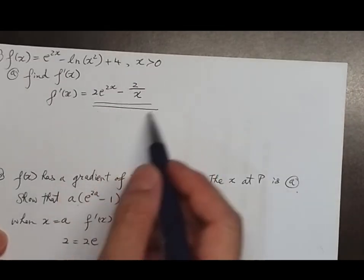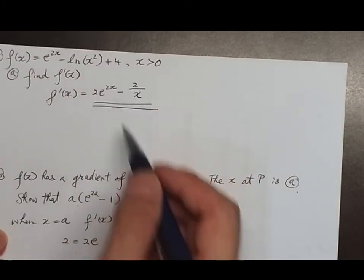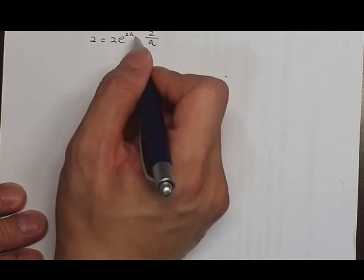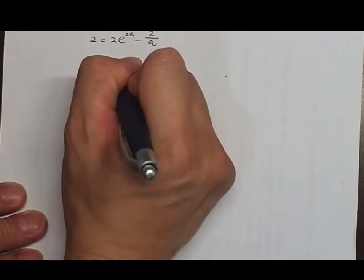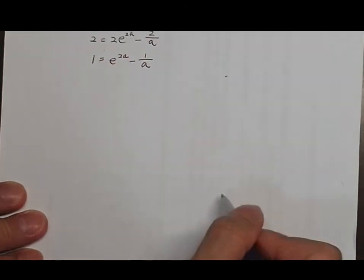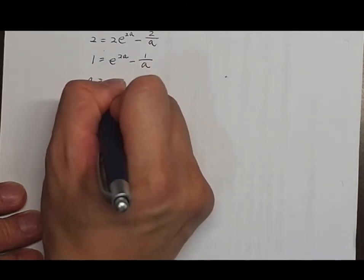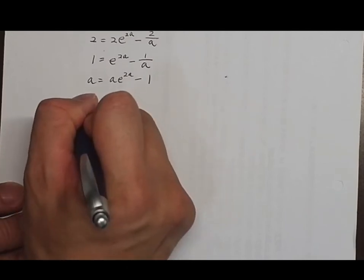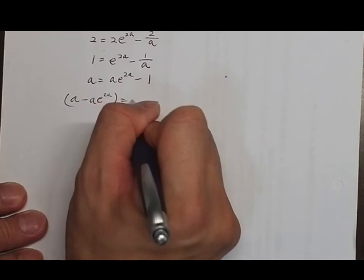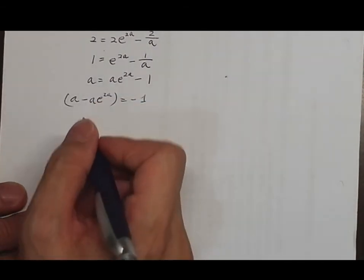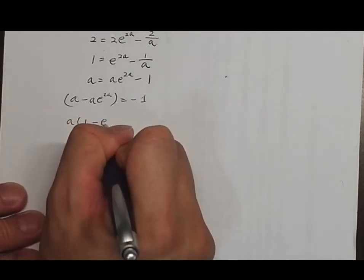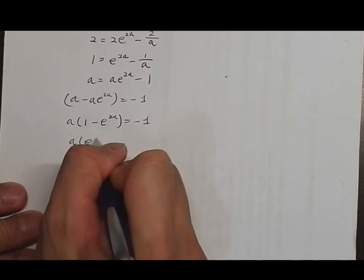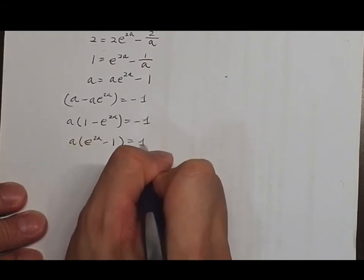Setting 2 equals 2e to the 2a minus 2/a, we divide both sides by 2: 1 equals e to the a minus 1/a. Multiplying each side by a: a equals a·e to the a minus 1. Rearranging: a minus a·e to the a equals minus 1. Taking common factor a: a(1 minus e to the a) equals minus 1. Multiplying by minus 1: a(e to the a minus 1) equals 1. Proved.